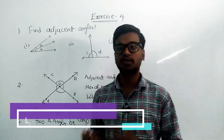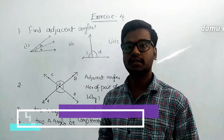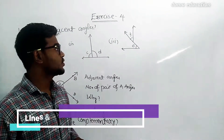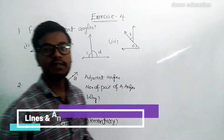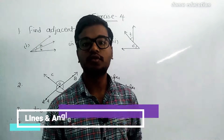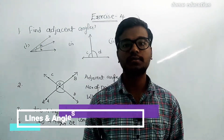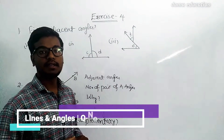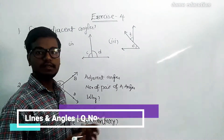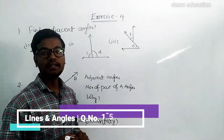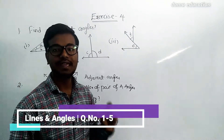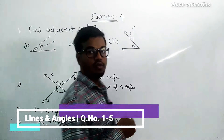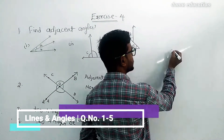In this module we are going to discuss what are adjacent angles. Before going to Exercise 4, we should first know what is meant by adjacent angles. Adjacent angles are two angles which have the same arm and the same vertex.